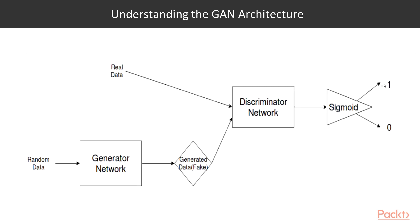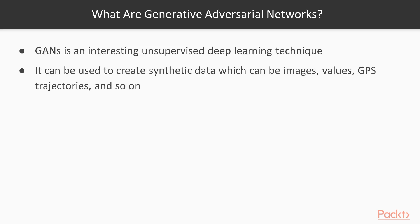The weights are fine-tuned so that this thief — the Generator — generates such convincing fake data that the Discriminator totally becomes fooled. It cannot tell whether the fake data is different from the real data, and it gives a probability of 0.5, meaning it doesn't know whether the data is real or fake. That is the purpose. Now you can answer: what are Generative Adversarial Networks?